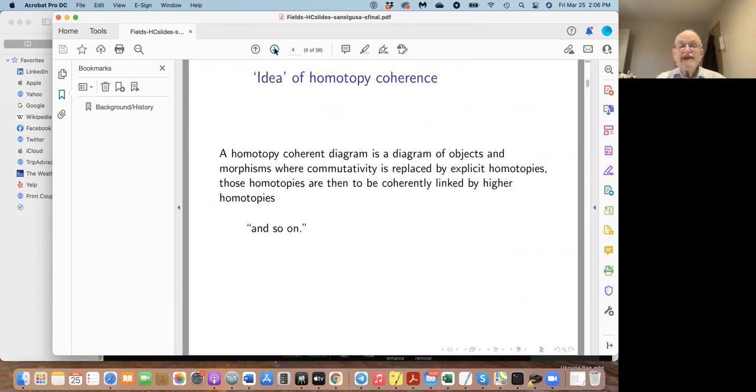Very briefly, these are some of the topics in approximately the order they will appear. As you can see, homotopy coherence applies to a lot of different things. So what's a homotopy coherent diagram? It starts with a usual diagram of objects and morphisms, where commutativity is not necessarily holding but is replaced by explicit homotopies. These homotopies in turn are coherently linked to higher homotopies and so on. That hides a lot of important structure.